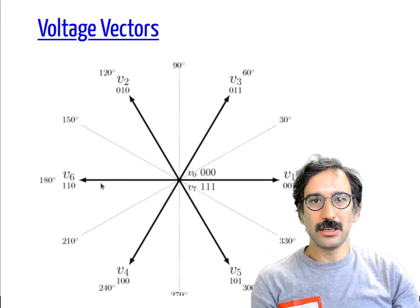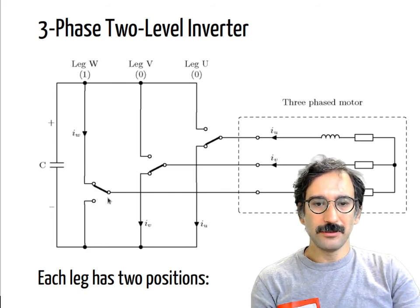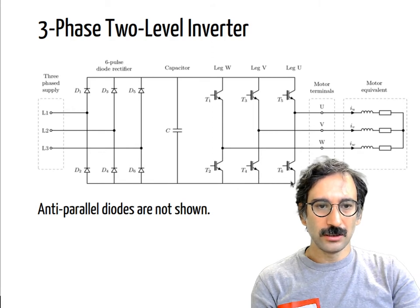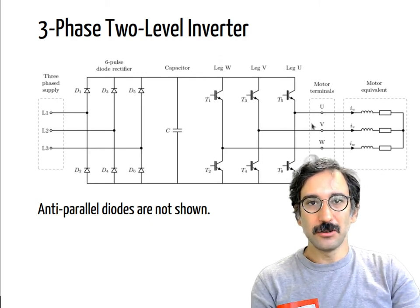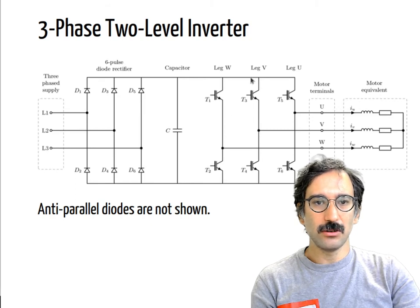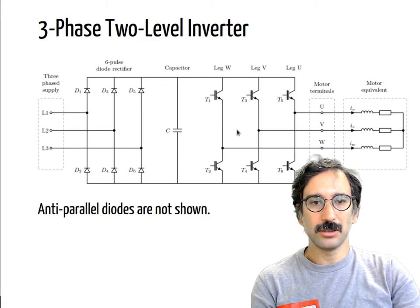We said there are eight combinations — what about the remaining two? If you turn on all bottom switches and turn off all top switches, all three phases are shorted to each other through those transistors and connected to the negative terminal of the capacitor, so technically zero voltage is applied to the phase terminals. This zero-zero-zero vector is called a zero vector.